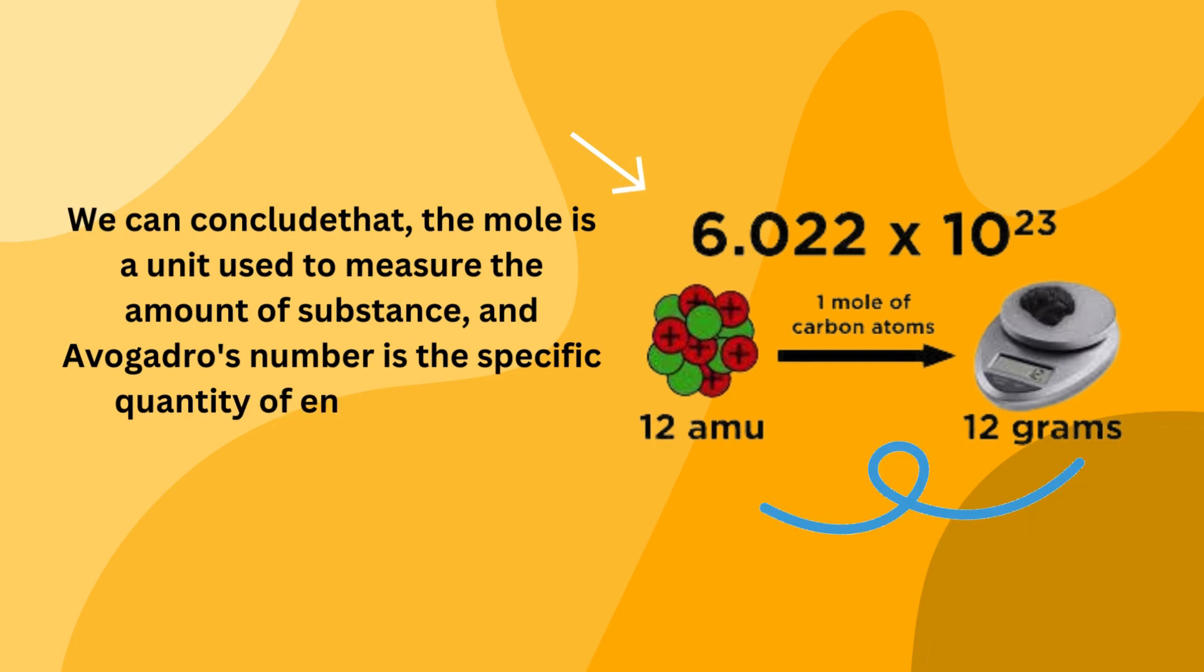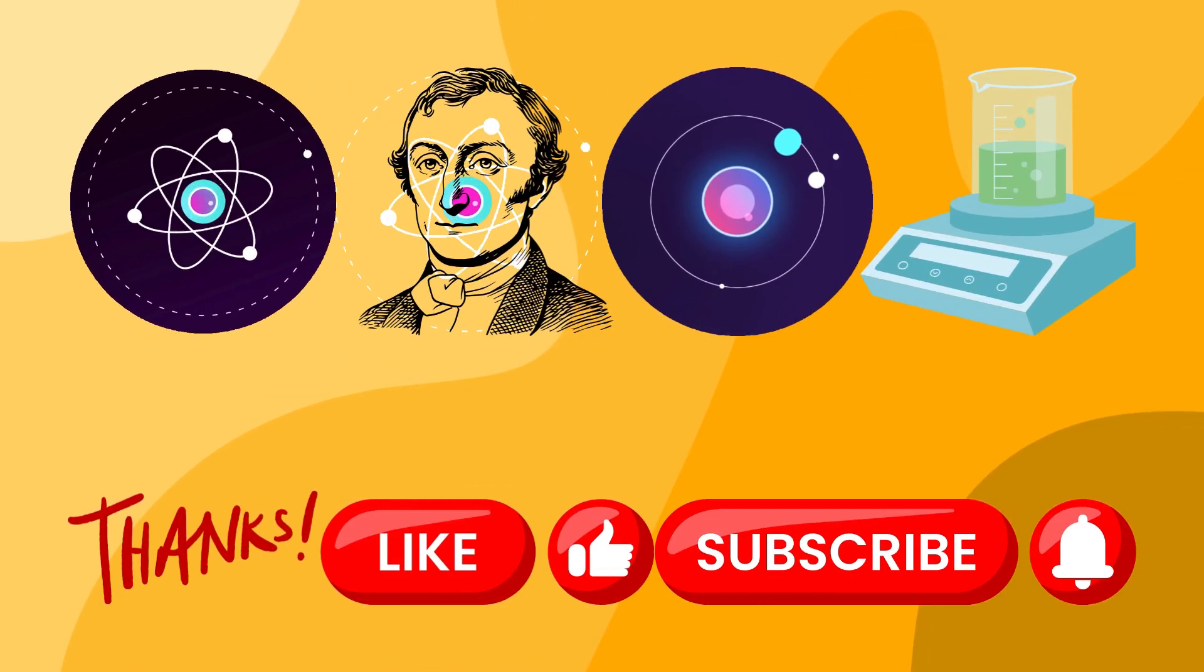Atomic mass of carbon equals 12 amu, means 1 mole of carbon equals 12 gram and contains 6.022 into 10 to the power of 23 carbon atoms.